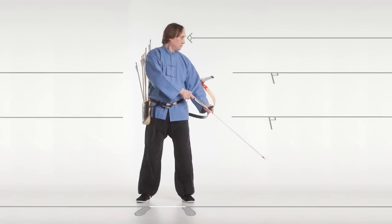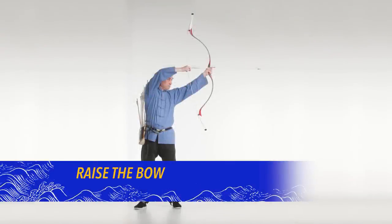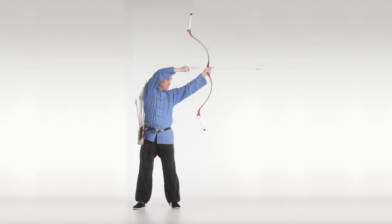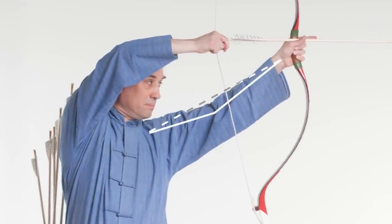Take care to maintain this alignment when you raise the bow. Maintaining your alignment, raise your bow overhead without lifting the shoulders out of their sockets. Keep the bow arm elbow crooked slightly downward to maintain this correct shoulder alignment.